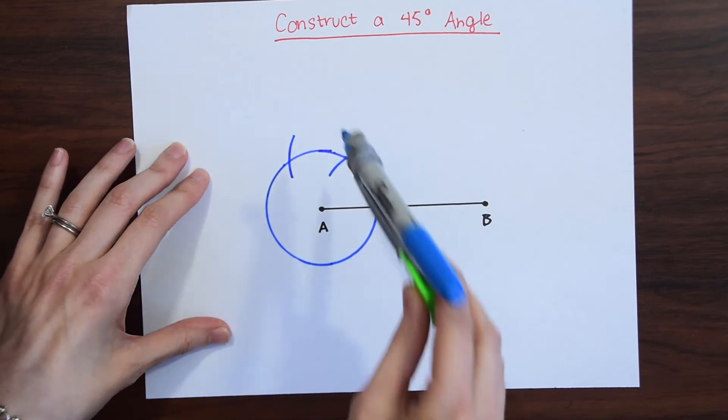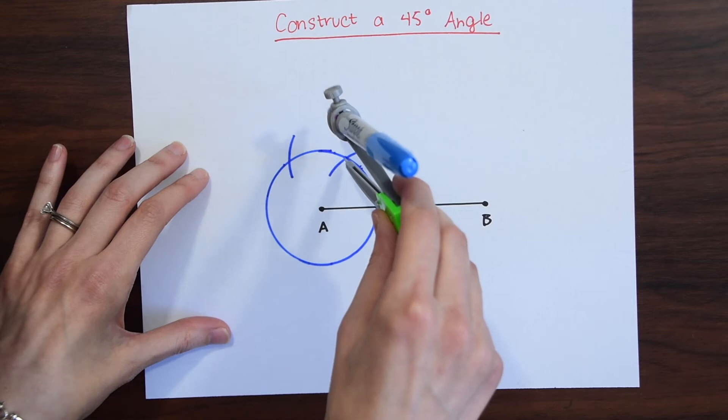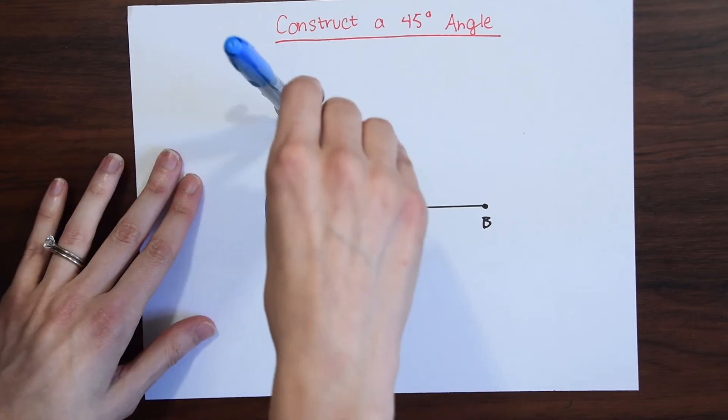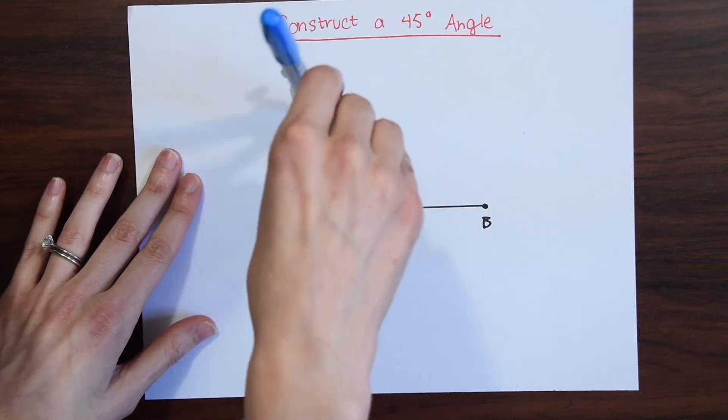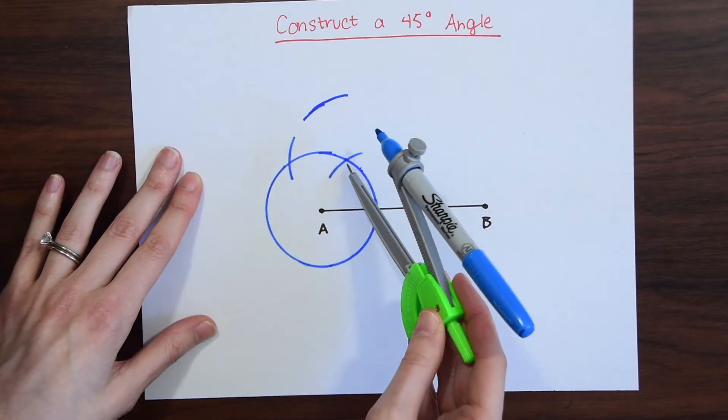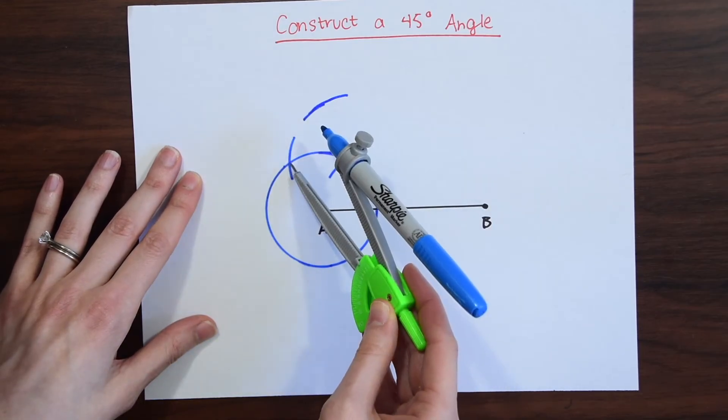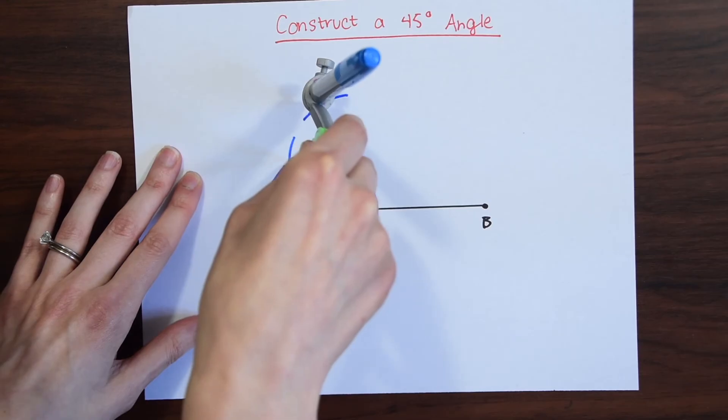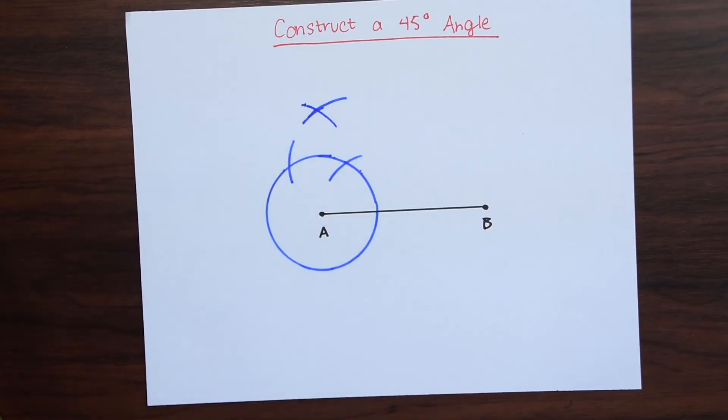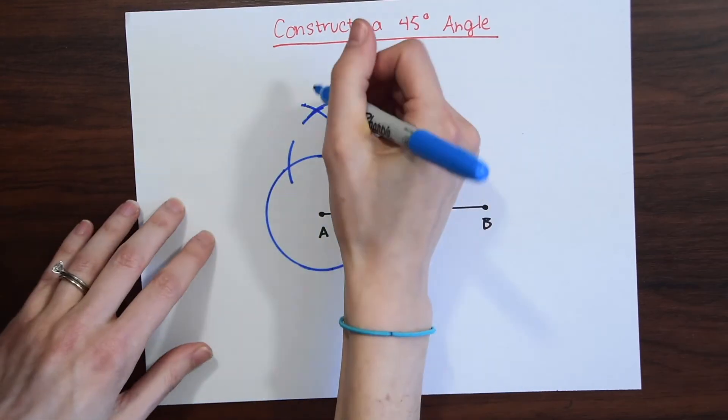From here we're going to do the same thing from each of these points. We're going to go to this point right here and swing our compass back and forth like that. We took it to this point and now we're going to take it to this other point that's on our circle. Notice we made a little cross section.